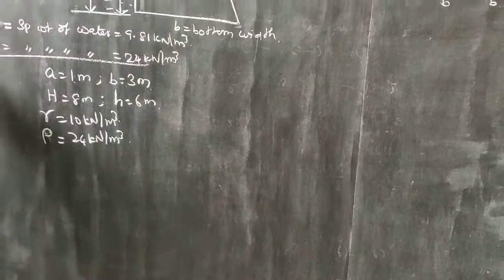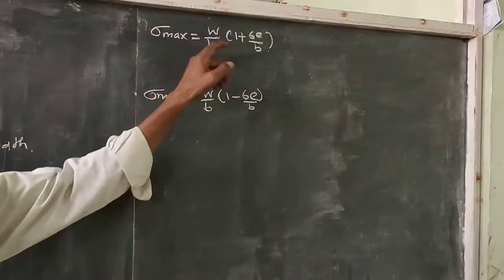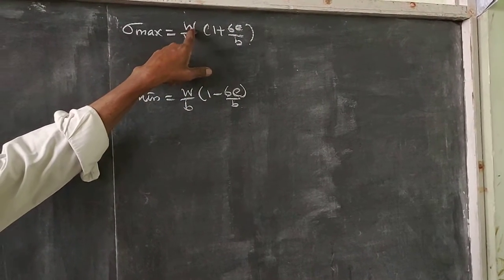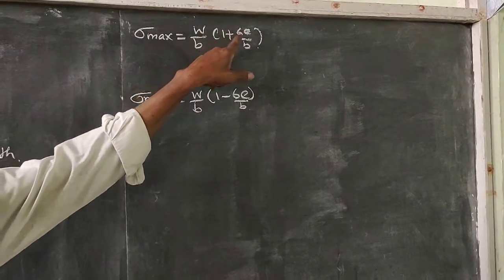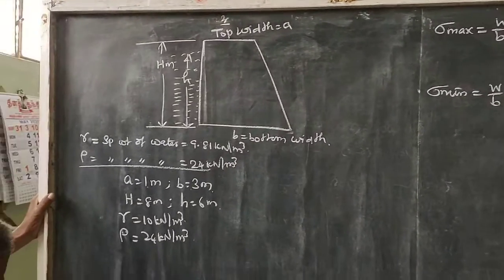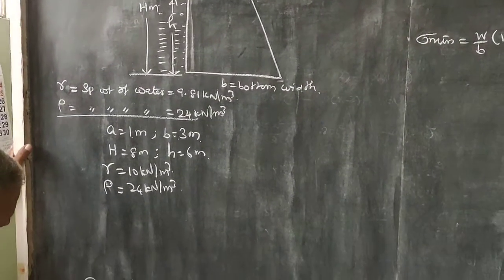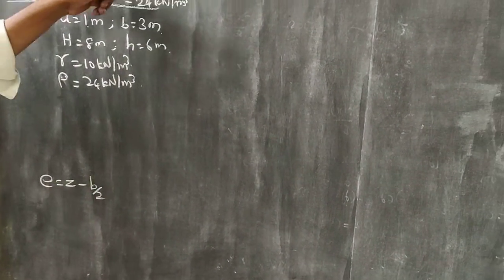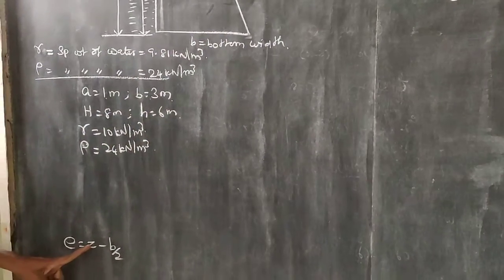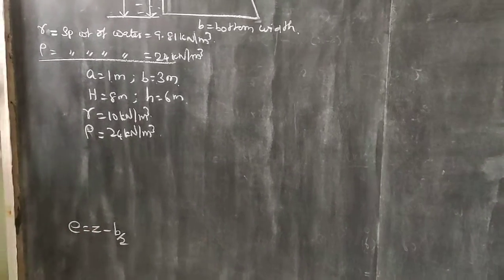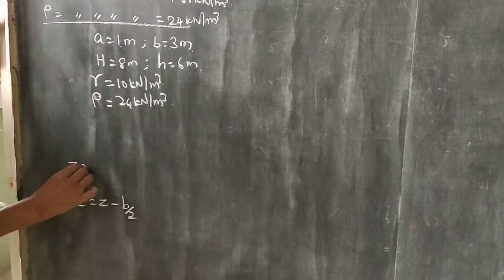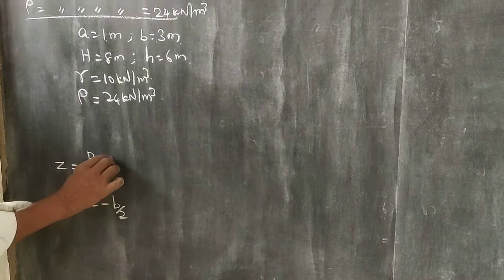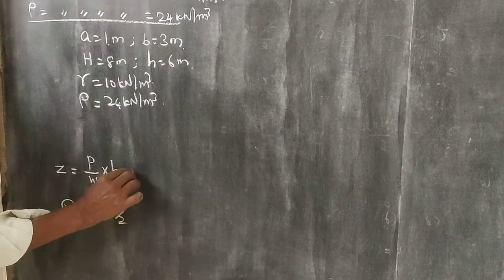What is the maximum stress? The weight is W. The eccentricity is e, which equals x minus B by 2. B is the bottom width. The left arm distance equals summation of W times x bar by W.